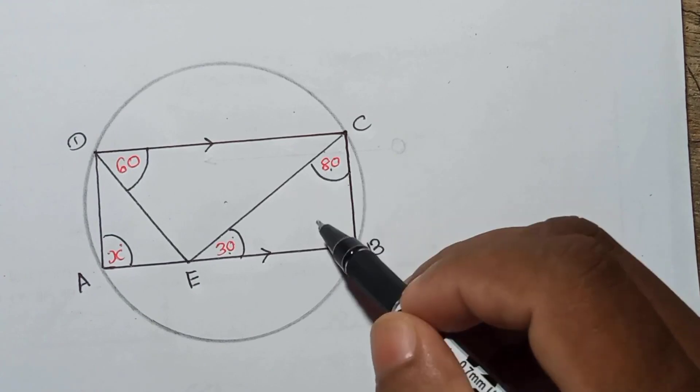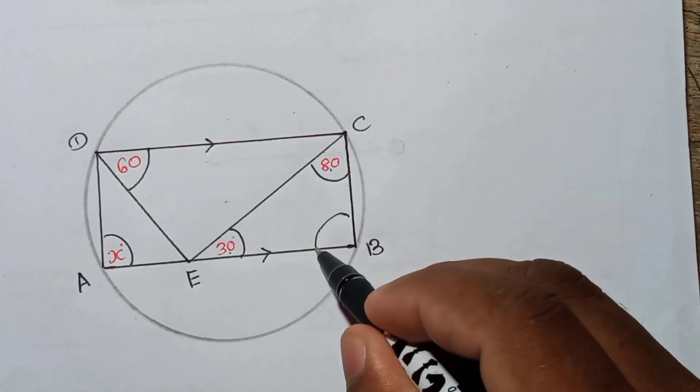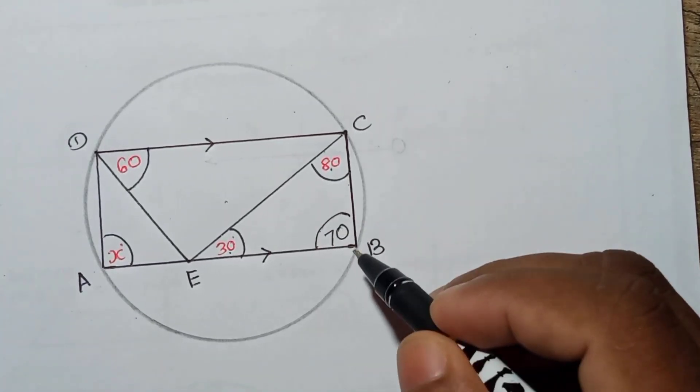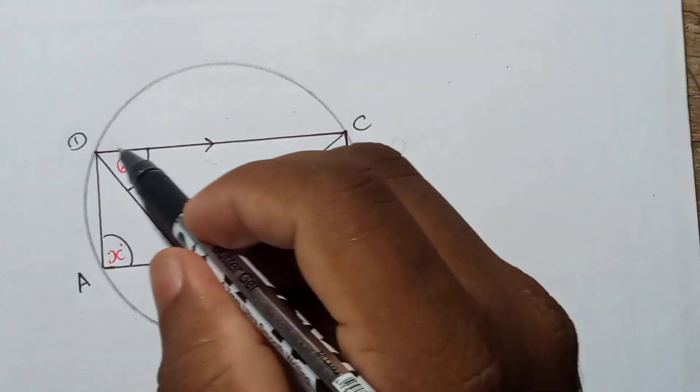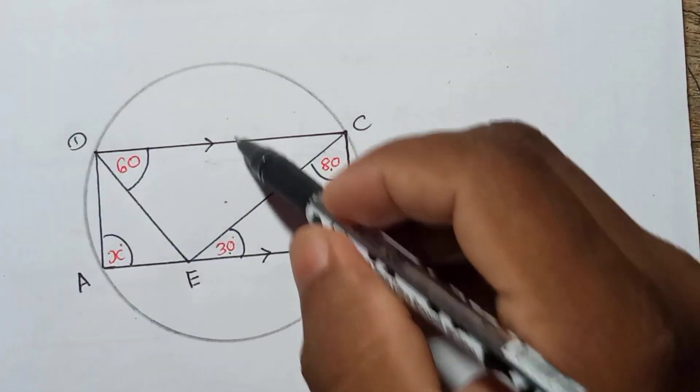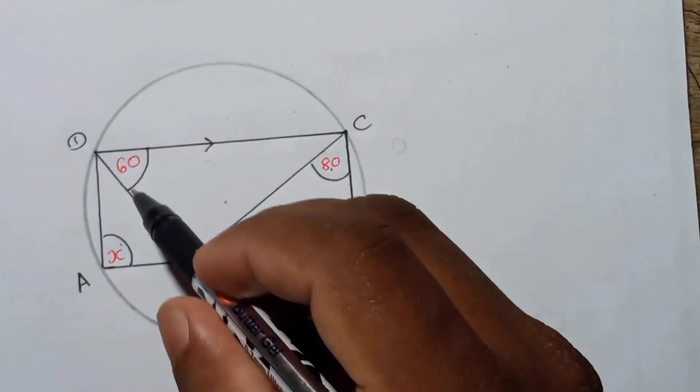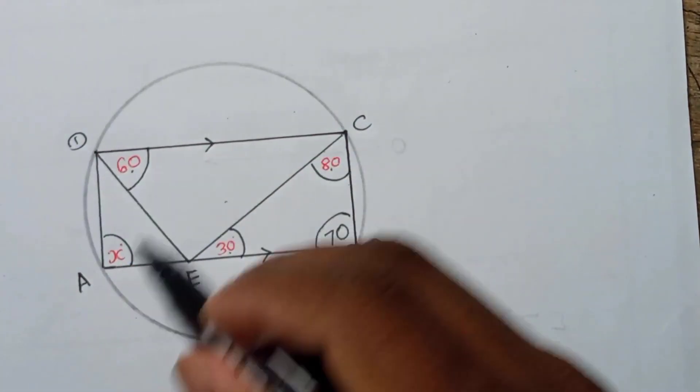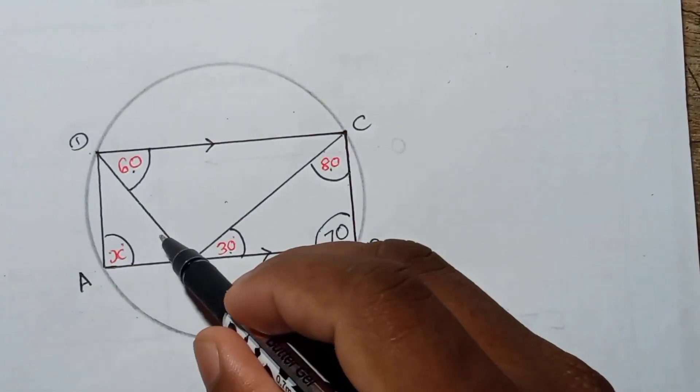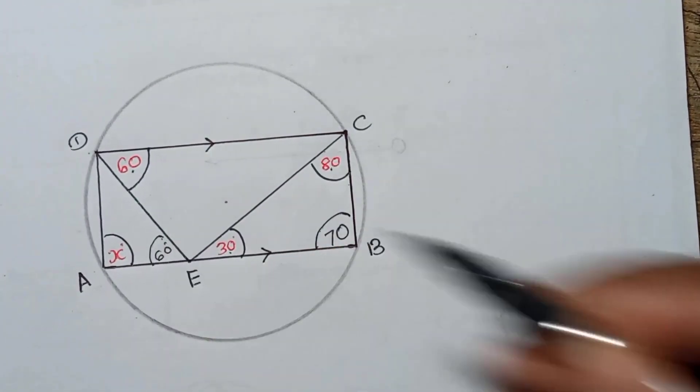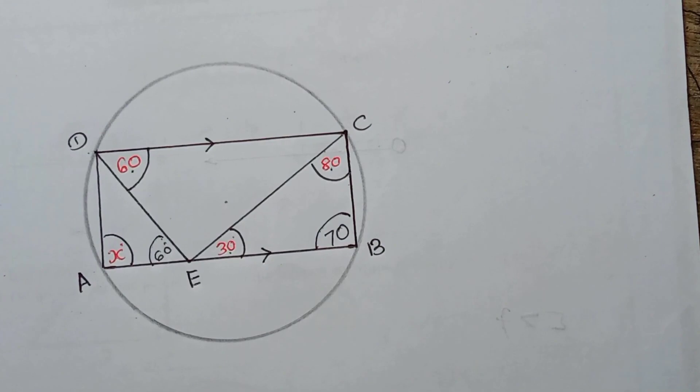So you can find easily this one is 70, right? And also if you consider these two lines parallel, you can see DC and AB are parallel. So if this is 60, like this way as alternate angles, this will be 60 right. You can mark that also.